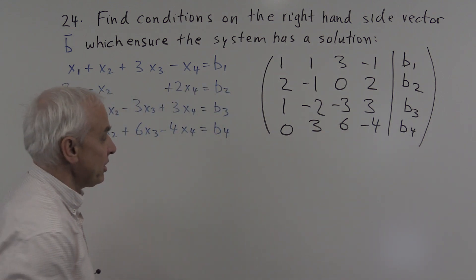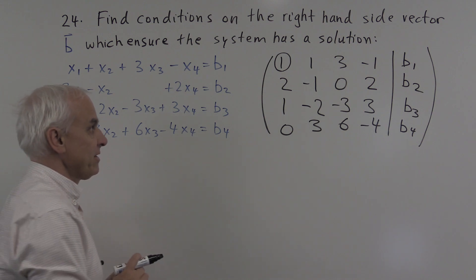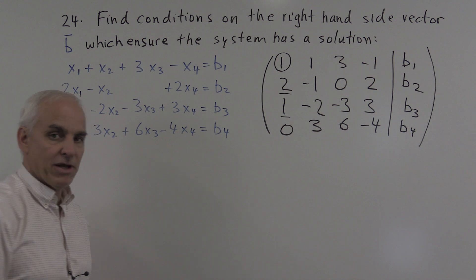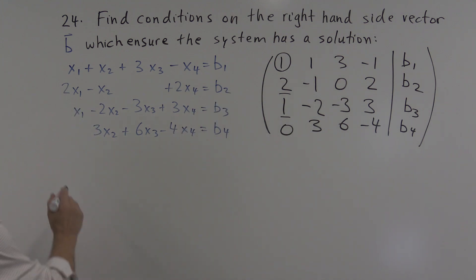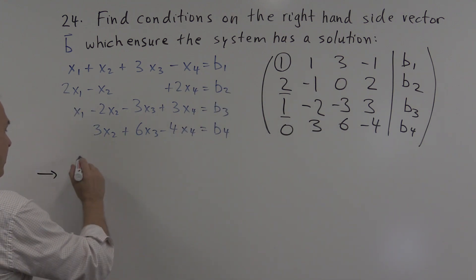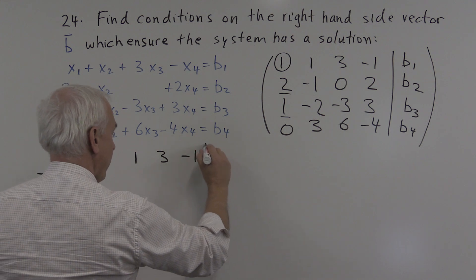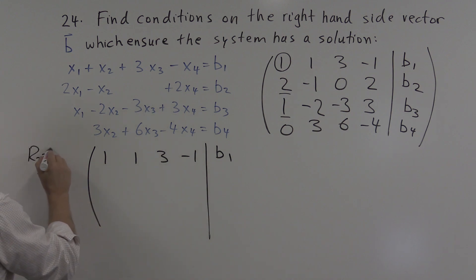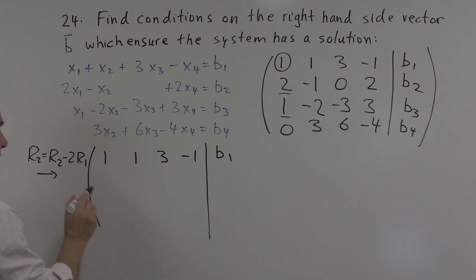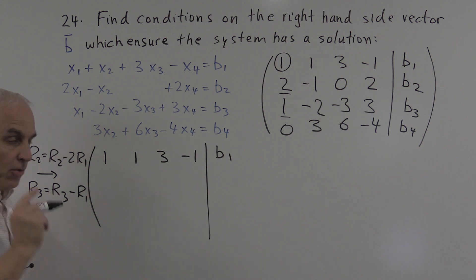What's our strategy? Same as it usually is. We'll start with this top left-hand entry — that's a pivot element — and we're going to use it to eliminate the entries below it by subtracting multiples of row 1 from row 2 and row 3. We're going to keep row 1 where it is: 1, 1, 3, minus 1, b1. The new row 2 is the old row 2 minus 2 times row 1, and the new row 3 will be the old row 3 minus row 1. Row 4 we'll leave as it is because it already has a 0 where we want it to be.